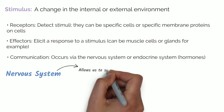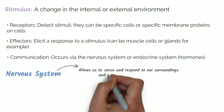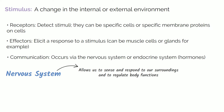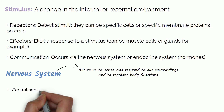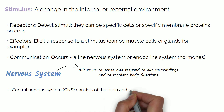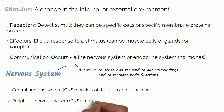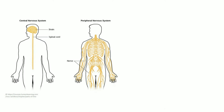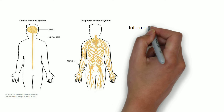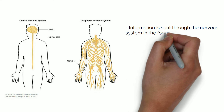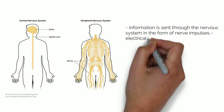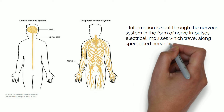The nervous system allows us to sense and respond to our surroundings and to regulate body functions. It is split into two parts: the central nervous system or CNS, which consists of the brain and spinal cord, and the peripheral nervous system or PNS, which consists of all nerves in the body. Information is sent through the nervous system in the form of nerve impulses — electrical impulses which travel along specialised nerve cells called neurons.